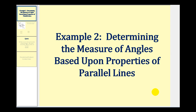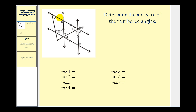Welcome to a second example of determining the measure of angles based upon the properties of parallel lines. Here we have a diagram with two sets of parallel lines as well as a couple of other transversals. We want to determine the measure of angle one through the measure of angle seven. Let's go ahead and label our parallel lines: line L and line M, line P and line Q.